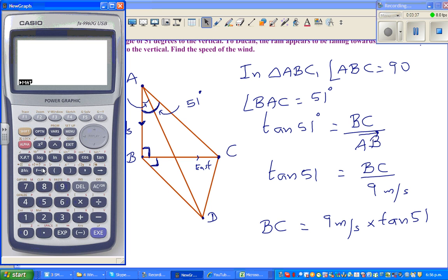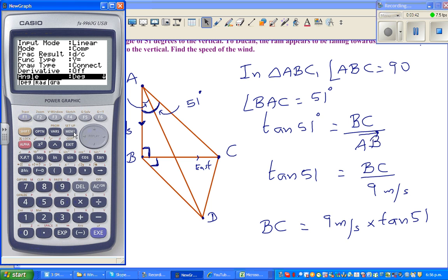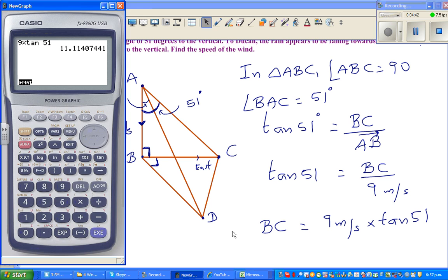Let me get the calculator out. First thing, whenever you're using trigonometry with a graphic calculator, always check whether your calculator is set on degrees. Press shift, setup. This yellow letter is always associated with the shift key. You scroll down. If you want to work in radians you set it in radians, and if you want degrees you go on degrees. Gradient is something engineers use; 90 degrees is 100 gradients. So it's set on degrees. Now 9 times tan 51, I'll round this to 1 decimal place, so it's 11.1 meters per second.